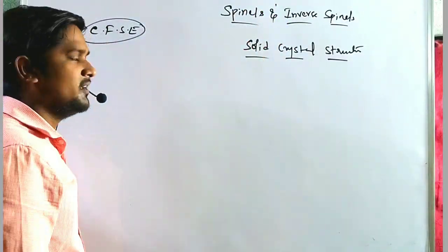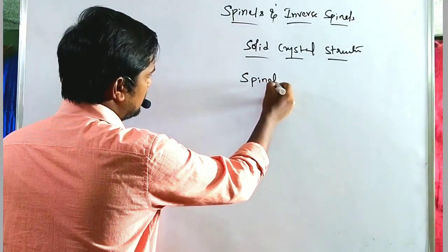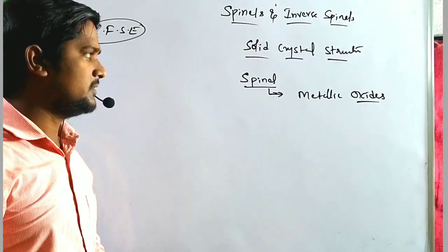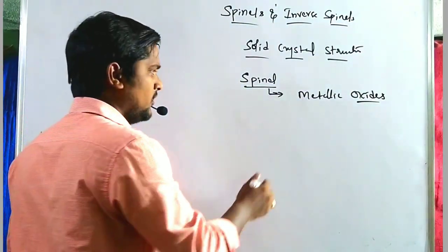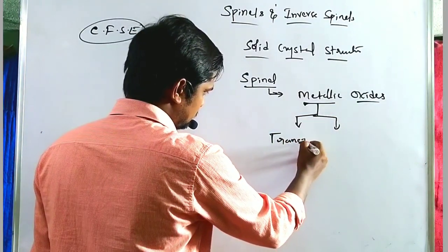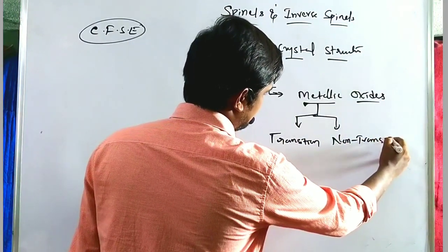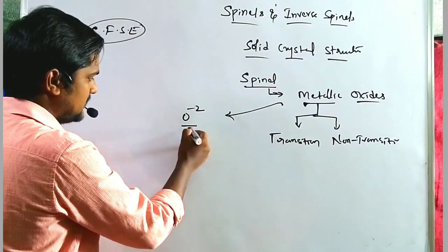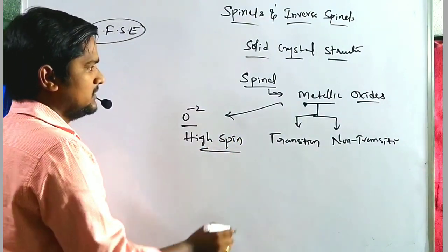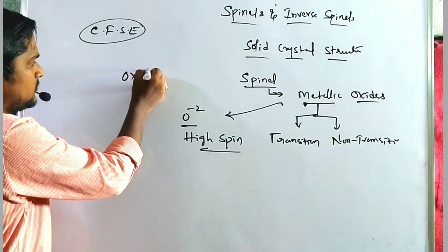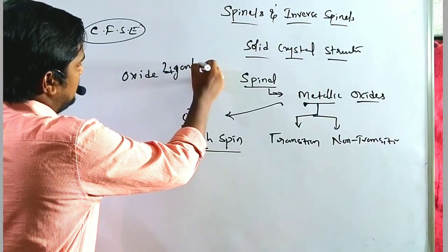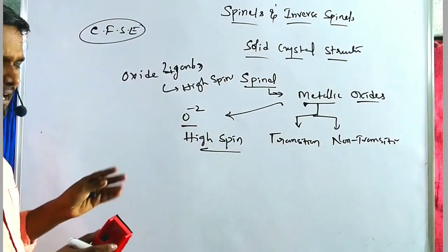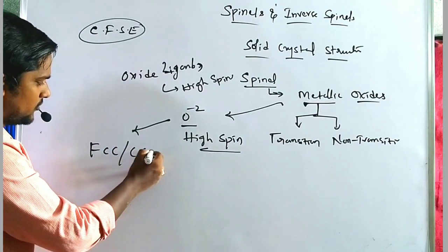Spinels are made up of metallic oxides, where metals can be either transition metals or non-transition metals. In these metallic oxides, oxygen is present in the O²⁻ state, which means it forms high spin complexes — that is, it is a weak field ligand. So in spinels and inverse spinels, the oxide ligand is a weak field, high spin ligand.